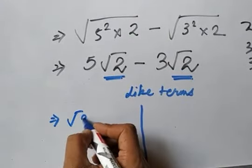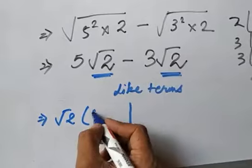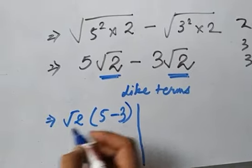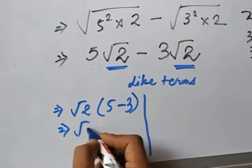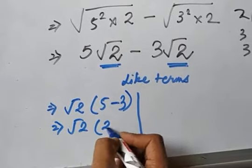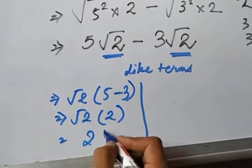So if you take root 2 common, what do you get? 5 minus 3. So you have root 2 into 5 minus 3 is 2. So the answer comes to 2 root 2.